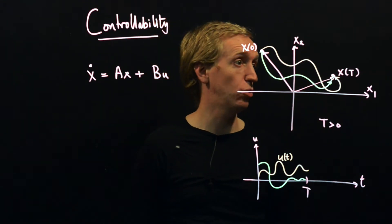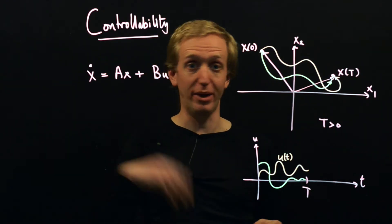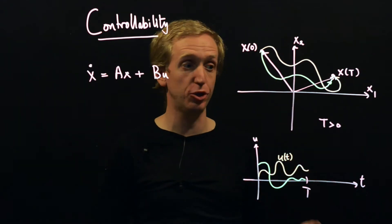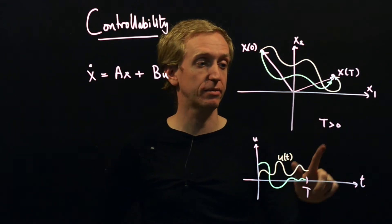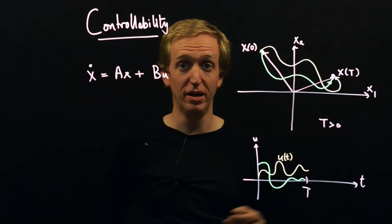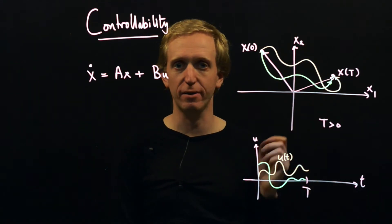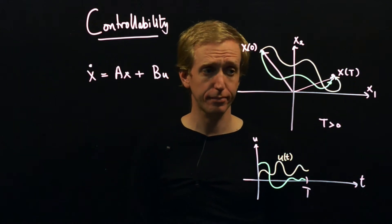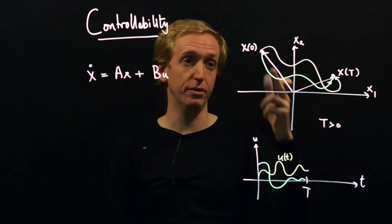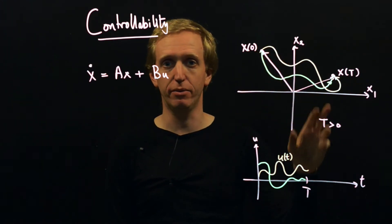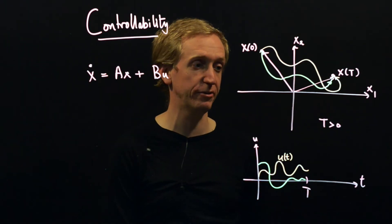If you think about it, it's really quite a strong requirement. This has to be true no matter where you start, no matter where you finish, and no matter, I guess most bizarrely, no matter what you choose for this value of time capital T. We're free to pick any time we want, we could pick T to be arbitrarily small, like a nanosecond. If the system is controllable, there must be an input that would take us from any starting point to any finishing point in one nanosecond, and that must be true for shorter times as well.